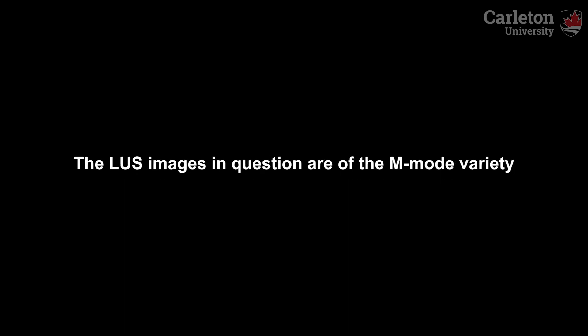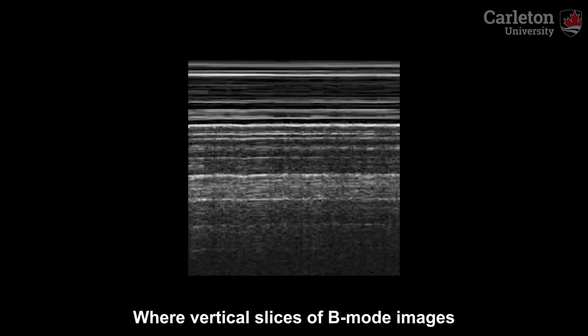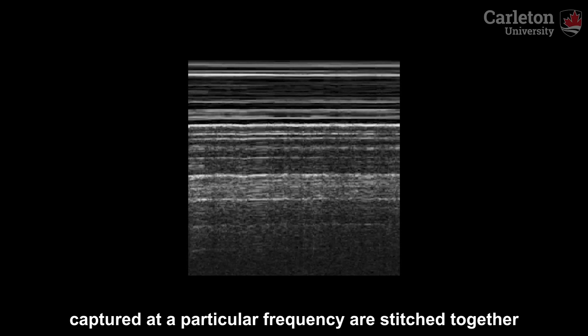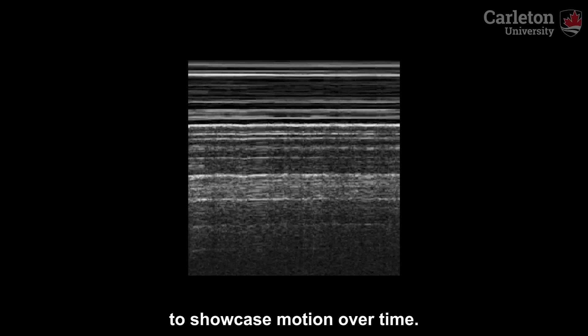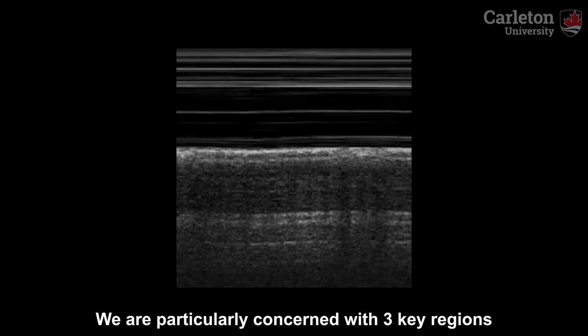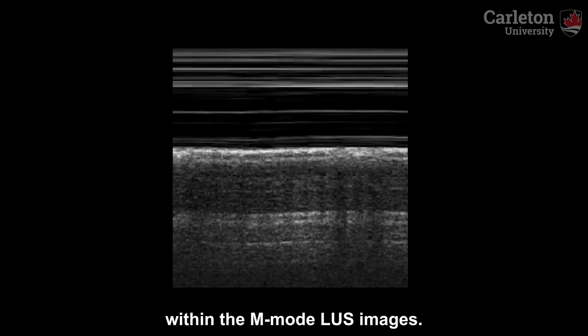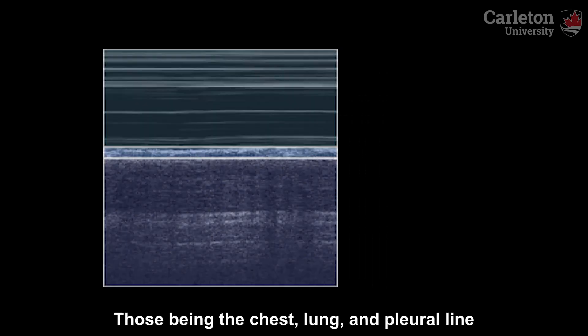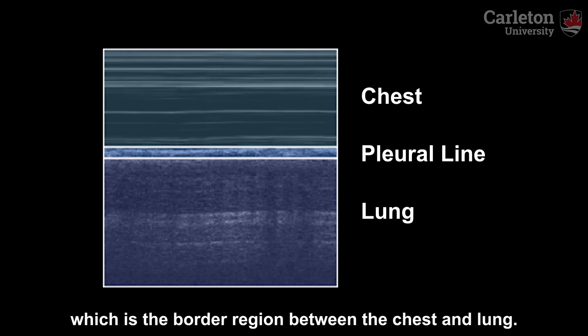The lung ultrasound images in question are of the M-mode variety, where a vertical slice of B-mode images captured at a particular frequency are stitched together to showcase motion over time. We are particularly concerned with three key regions within the M-mode lung ultrasound images: those being the chest, lung, and pleural line.